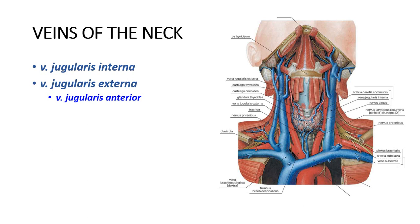The vena jugularis interna is the blood vessel that will receive intracranial tributaries, so it will drain everything inside of our skull and also the bones of our skull and the brain itself. With the extracranial tributaries it will also drain the soft tissues outside of the skull.